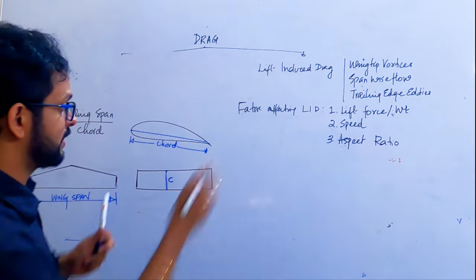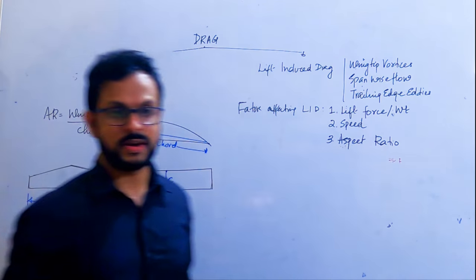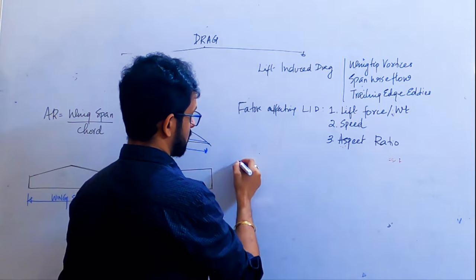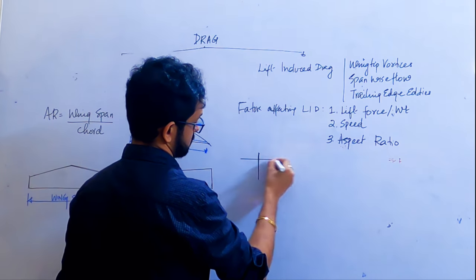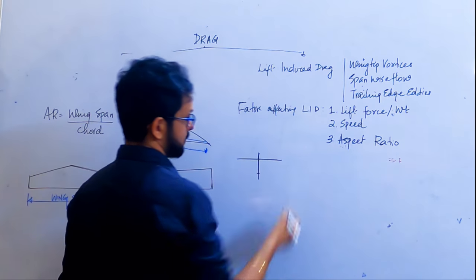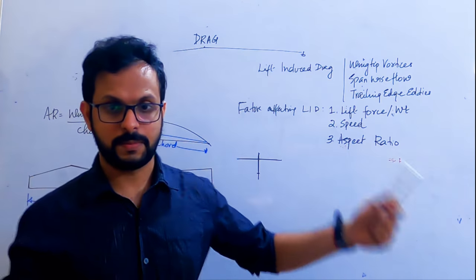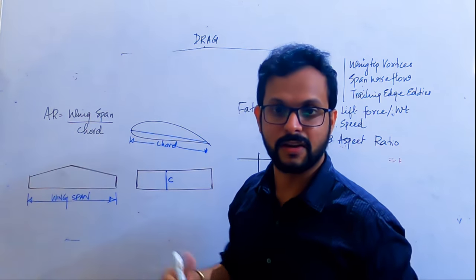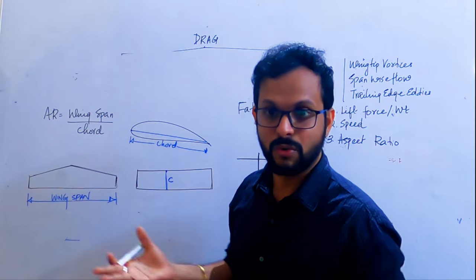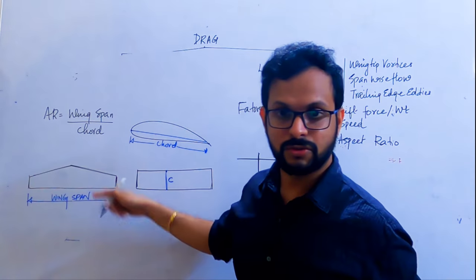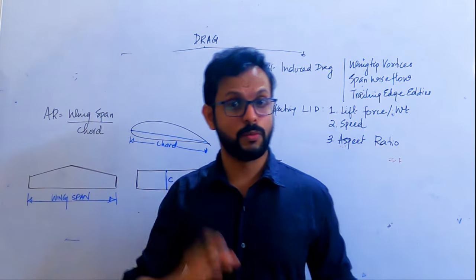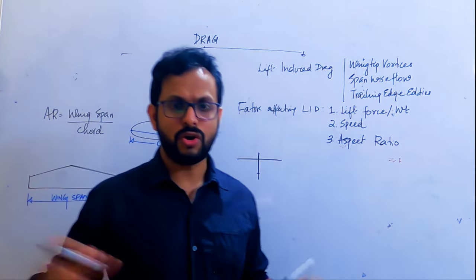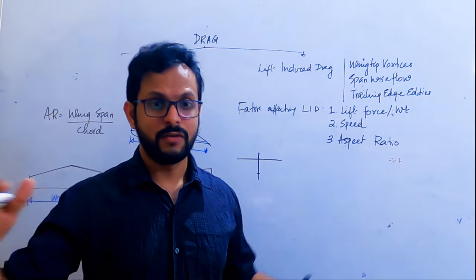We've seen this in a previous class, but let's revisit it. Aspect refers to the structure — the ratio of structural dimensions. It tells you how long something is for a given width, or how thick it is for a given width. That's how we define aspect ratio, and it applies to manufacturing and equipment as well.